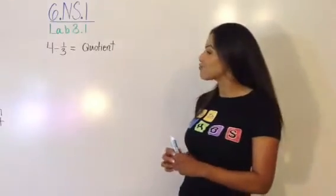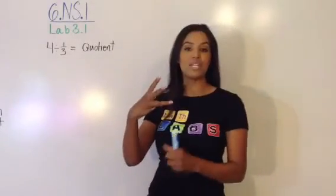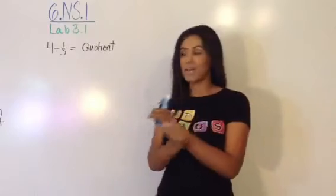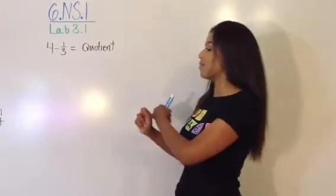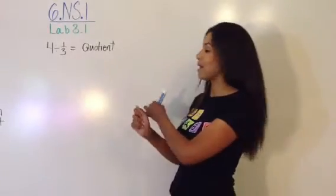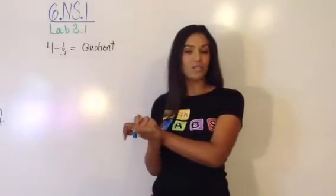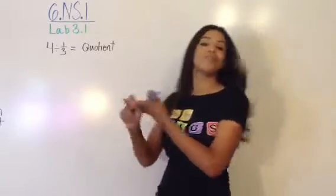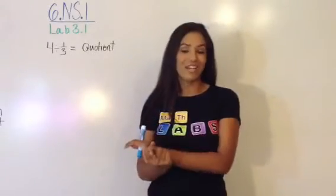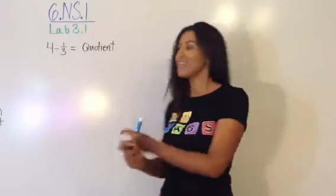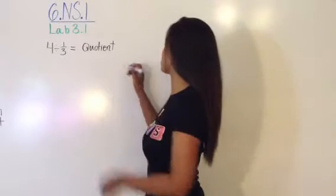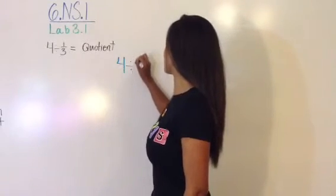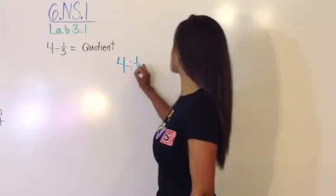Alright, I'm going to get right at it. There are three parts to each problem: to write the meaning along with the visual model, to use estimation — so you have to say greater than or less than 1 — and then of course to write your answer as the quotient. So our first problem here, I'm going to rewrite it over here so you can see it: 4 divided by 1 third.